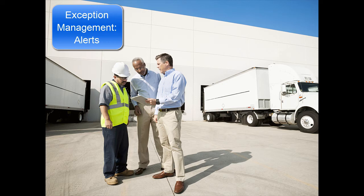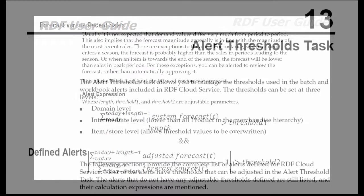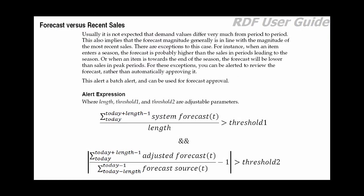RDF produces a lot of forecast data. This data needs to be approved before it is sent to downstream systems. Reviewing it is impossible due to the magnitude of the data set. RDF uses business rules implemented as alerts that will filter out the values that need to be reviewed. The user guide lists the alerts to assist you with your daily forecasting tasks. The first alert is the forecast versus recent sales alert, which compares the level of the recent sales to the level of the forecast.